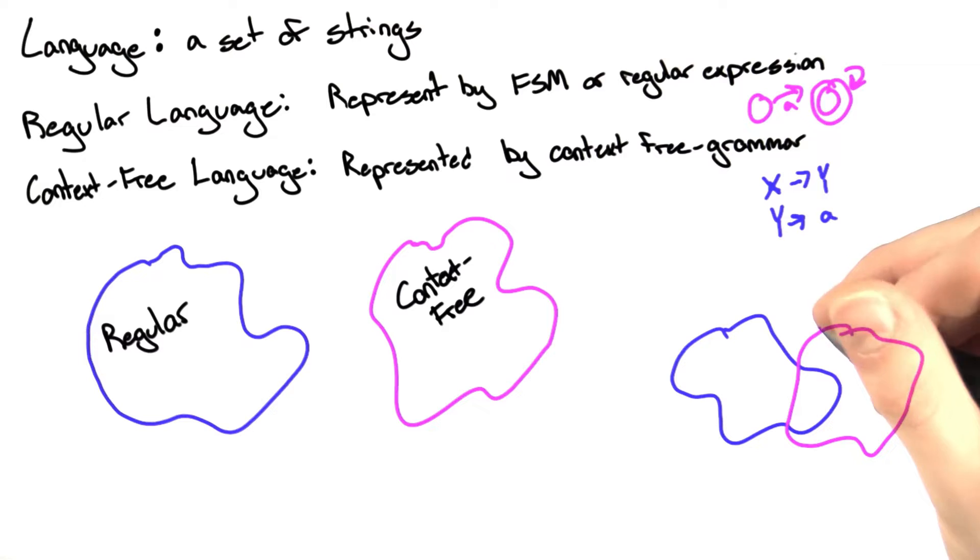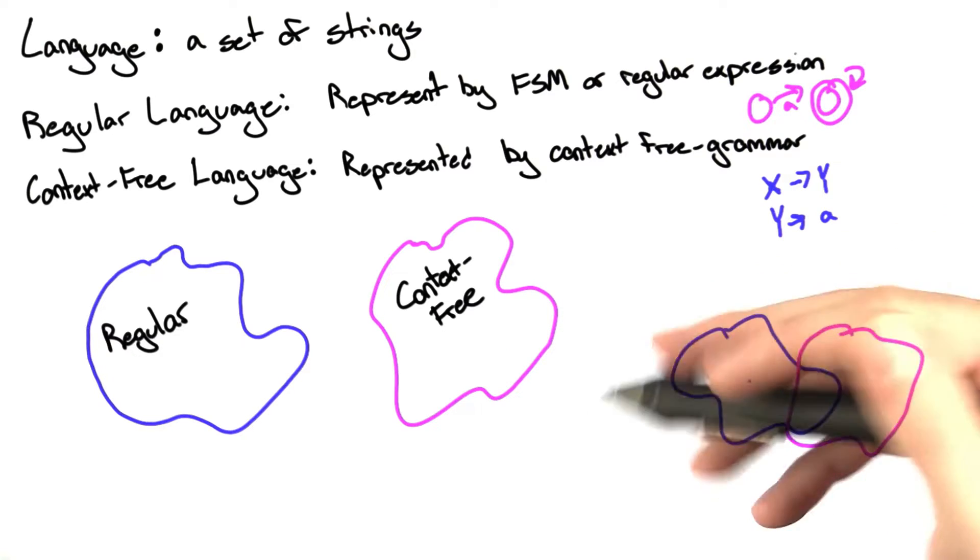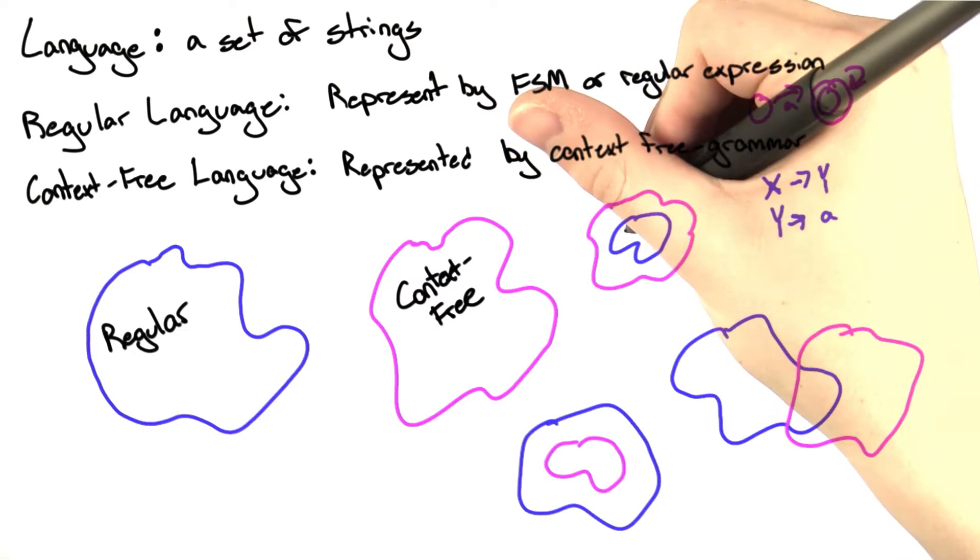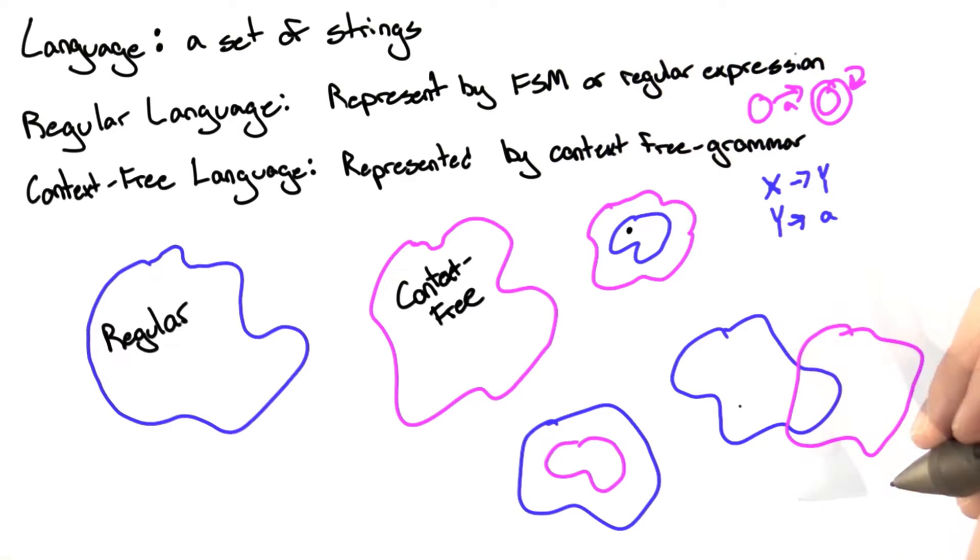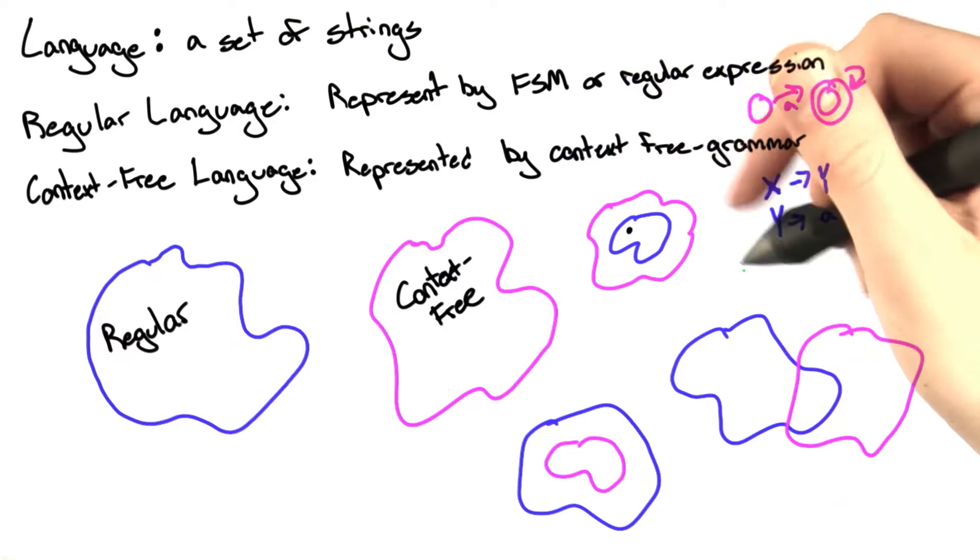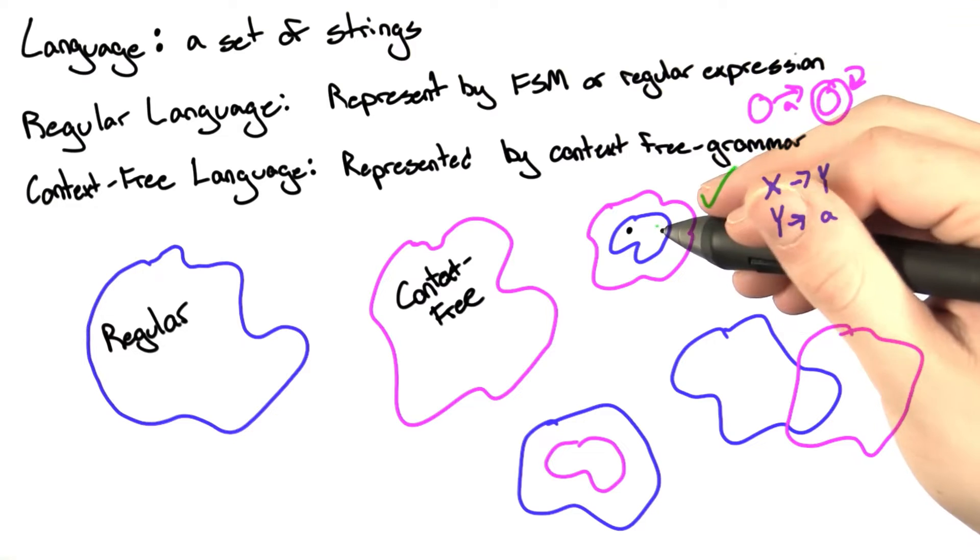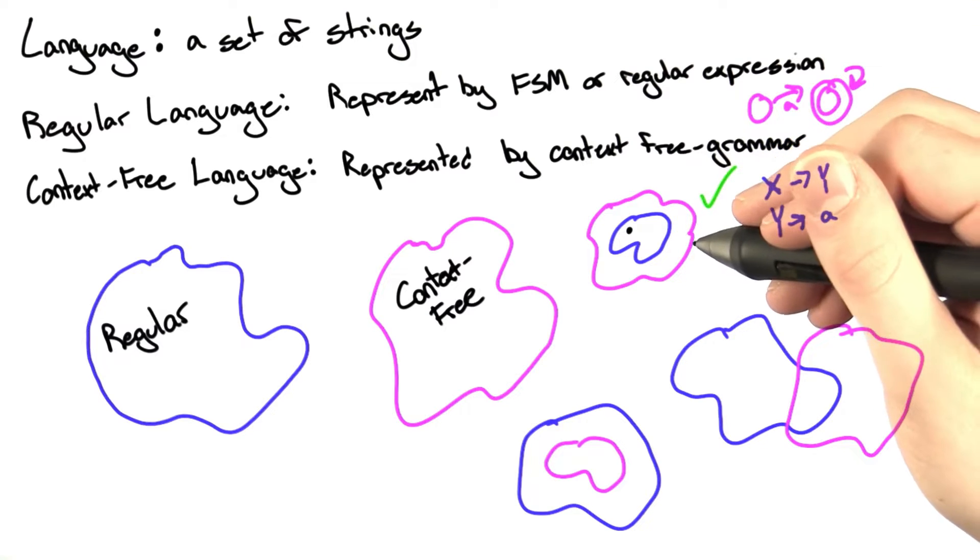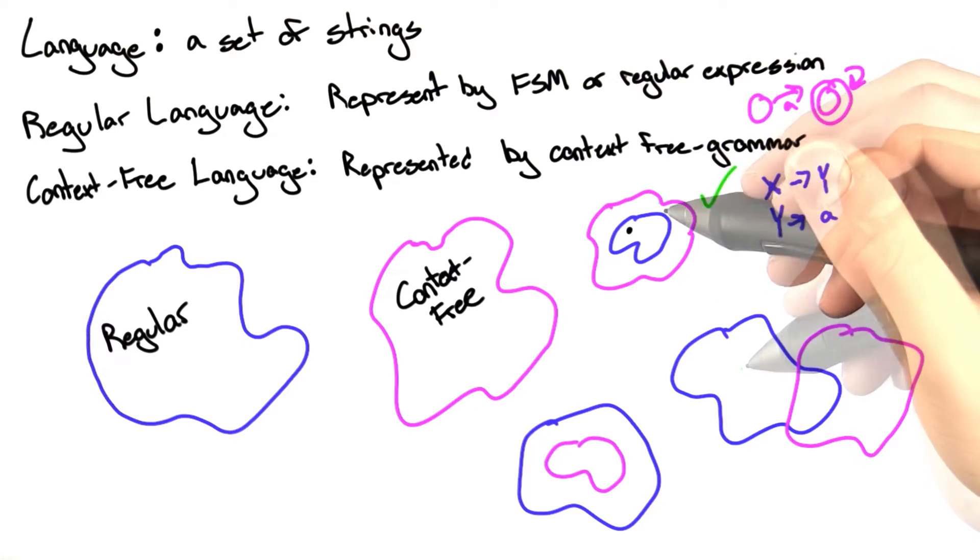And the last two possibilities are that all regular languages are context-free and vice versa. This kind of looks like a Pac-Man. As it turns out, this diagram is the correct one. All regular languages are context-free, but not all context-free languages are regular.